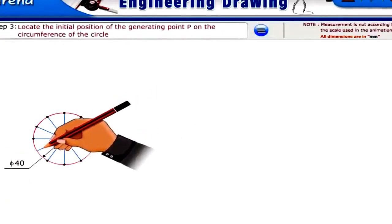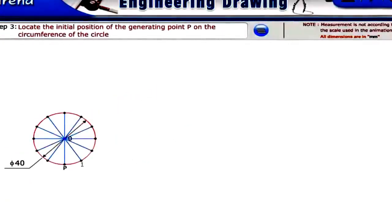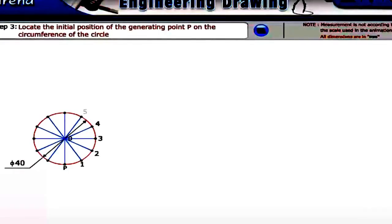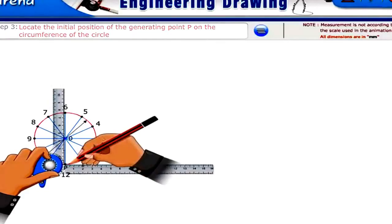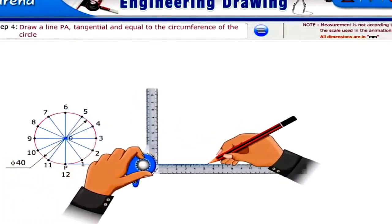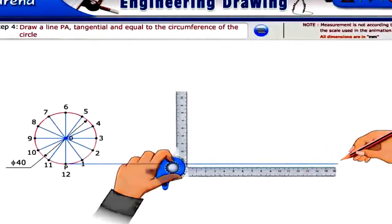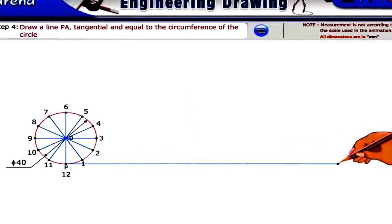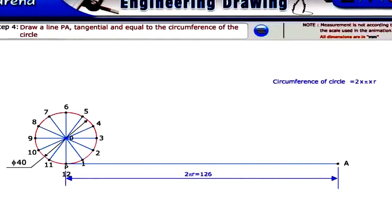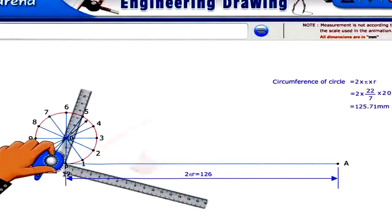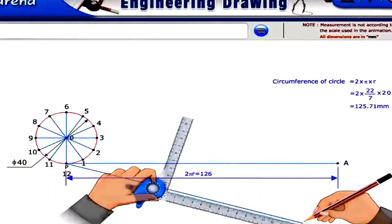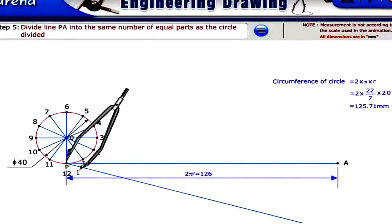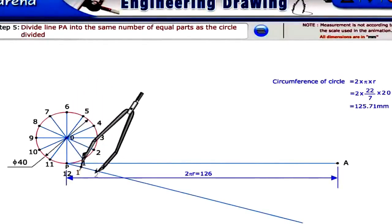Locate the initial position of the generating point P on the circumference of the circle. Draw a line PA tangential and equal to the circumference of the circle. Divide line PA into the same number of equal parts as the circle is divided.